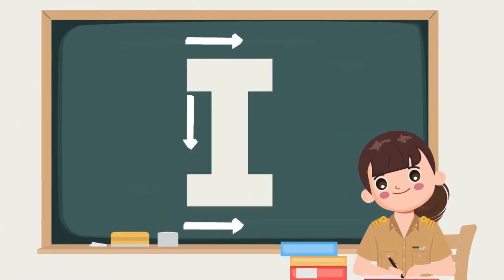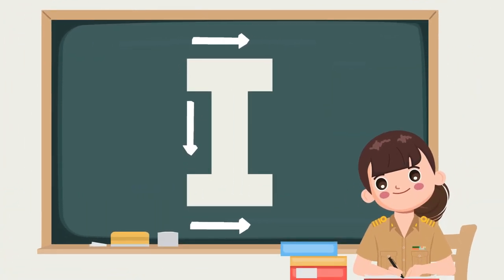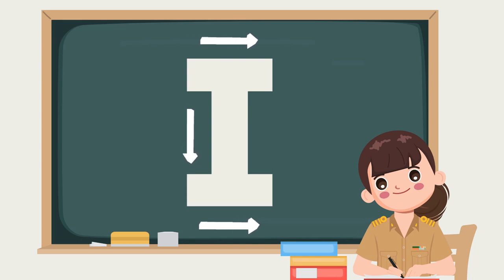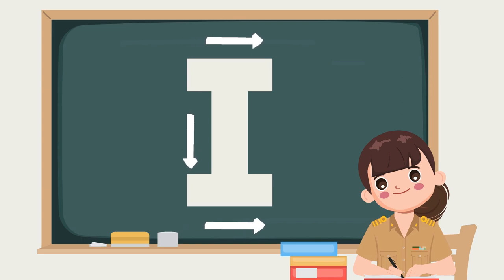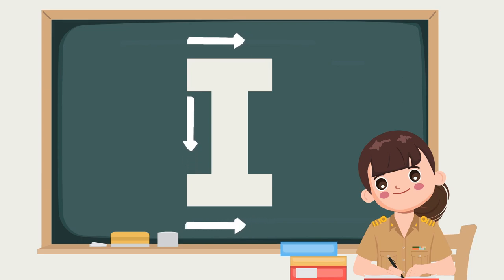Let's practice writing big letter I. Line down, line to the right on top, and line to the right on the bottom. Line down, line to the right on top, and line to the right on the bottom. Good job!